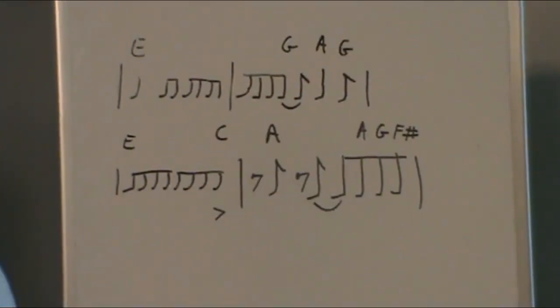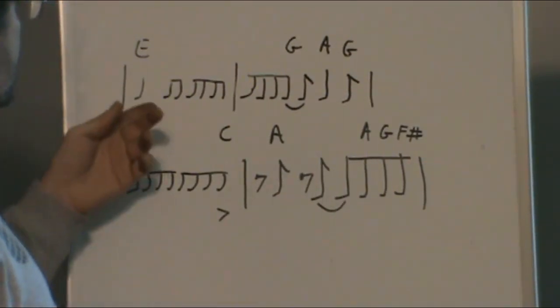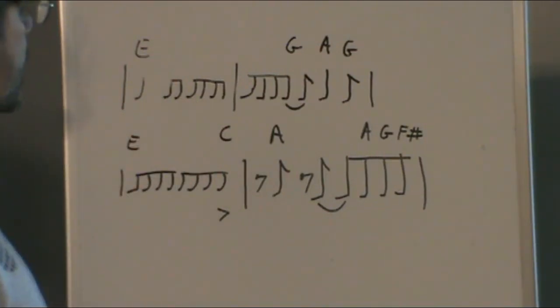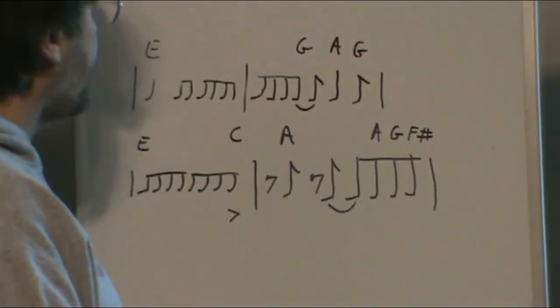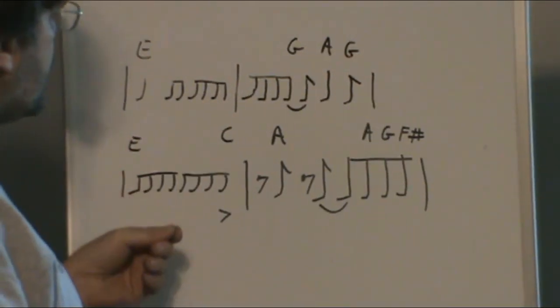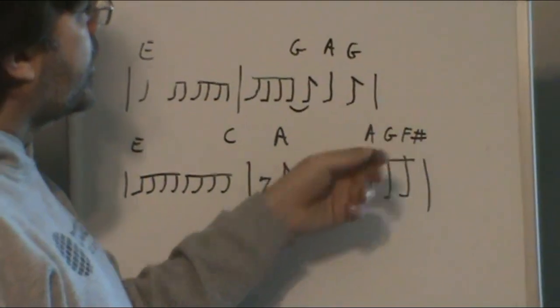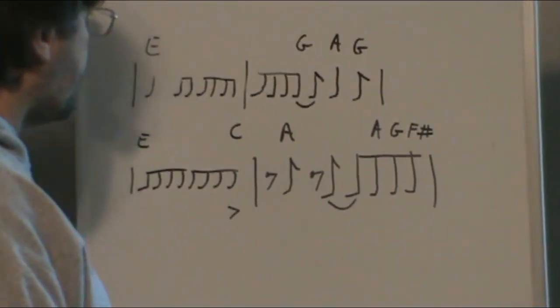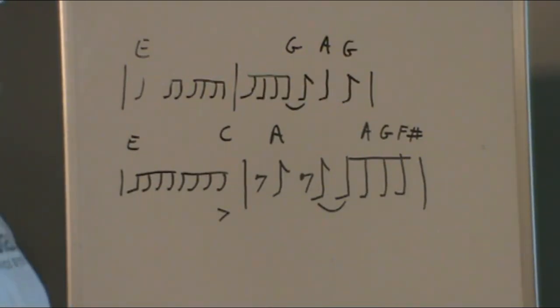Underneath the solo section it's pretty straightforward. You're starting to chunk eighth notes in E, and then there's very heavy emphasis on the upbeat. You get G, A, G here - those are all on the upbeat. You come back and chunk more eighth notes in E, and then it's C, A, and then you do a run down: A, G, F sharp, very heavily emphasizing the upbeat.